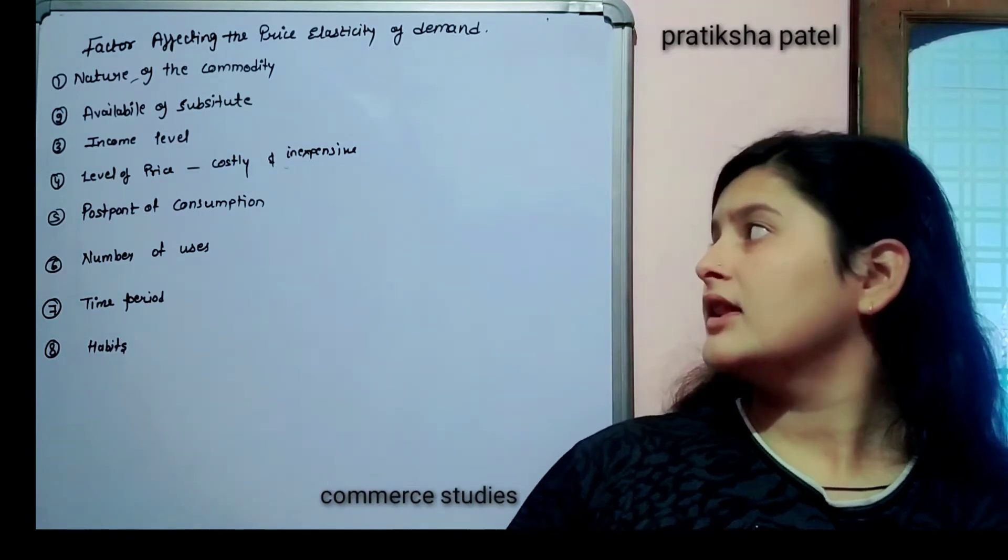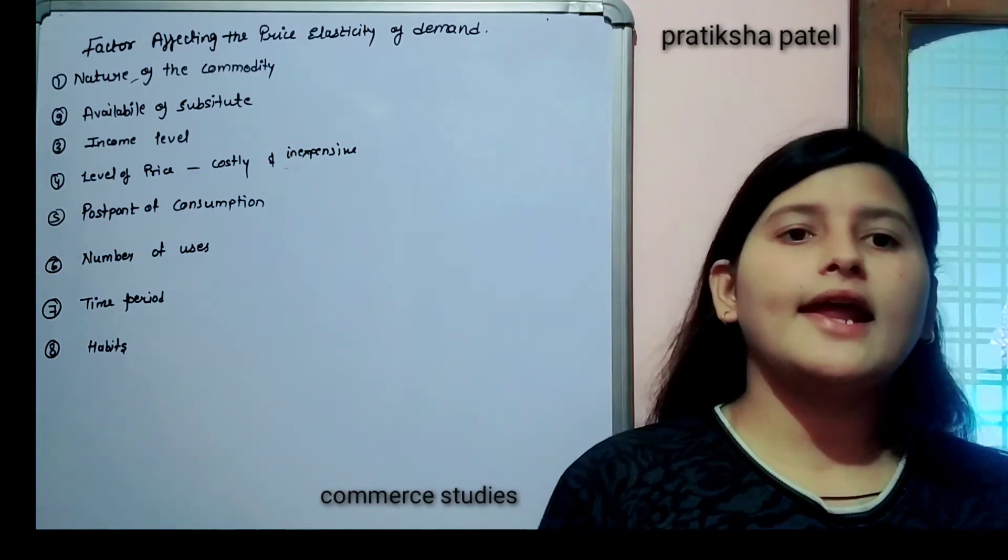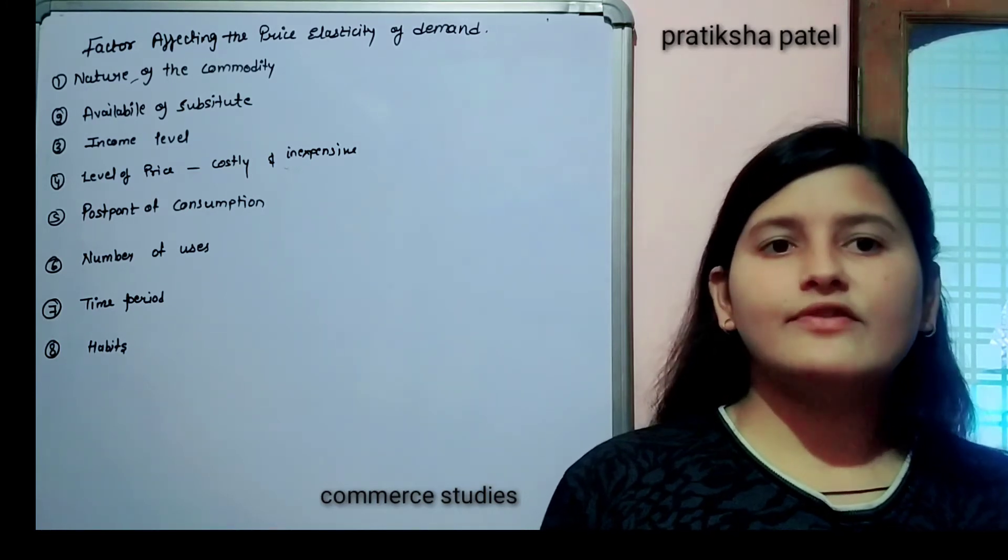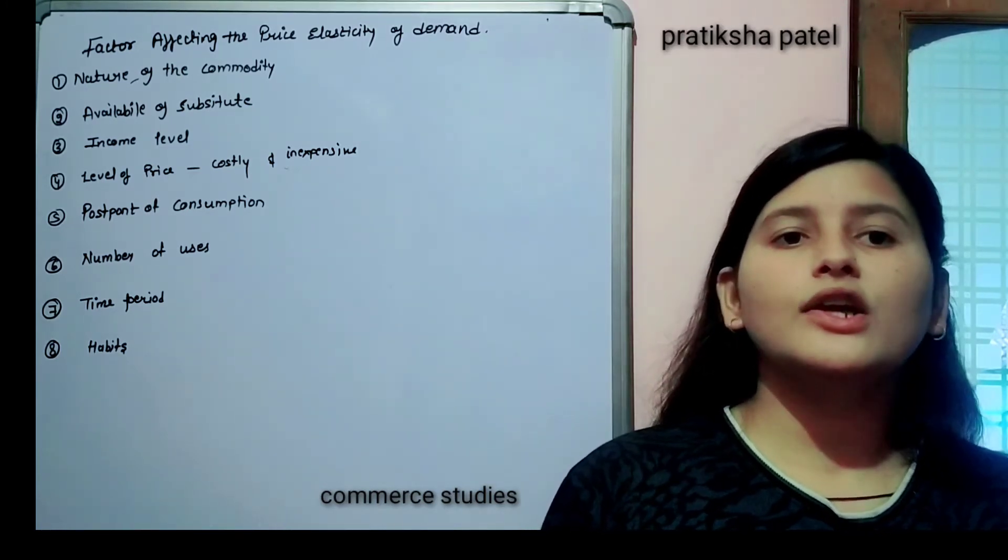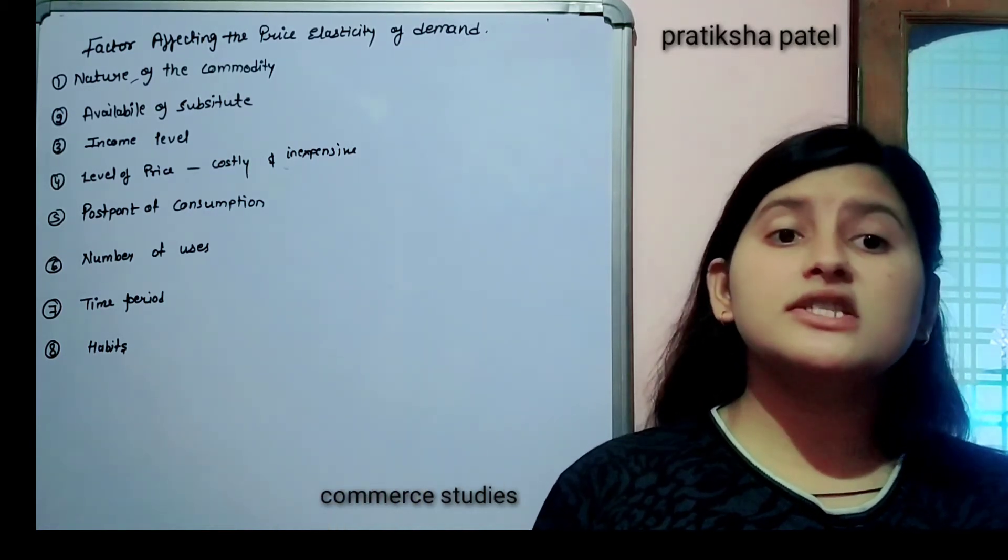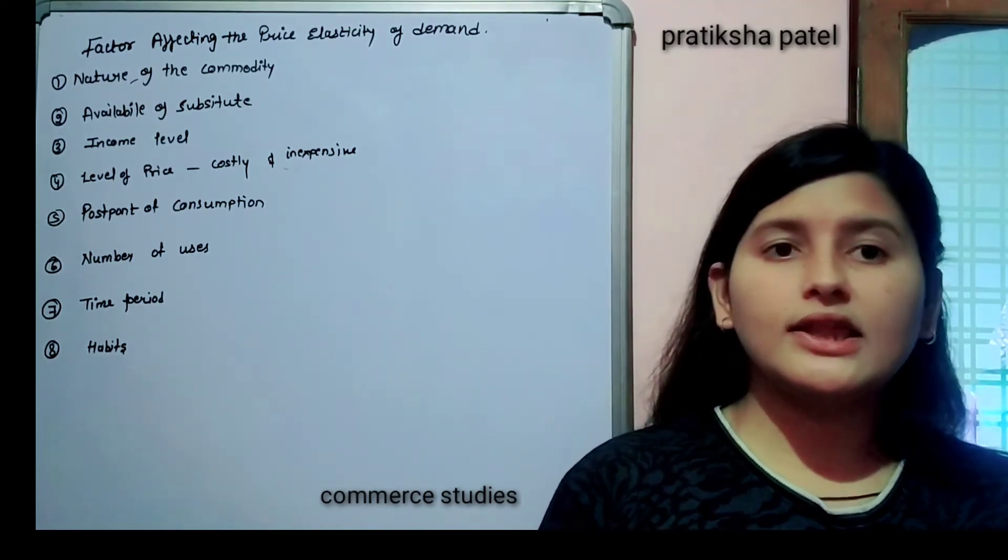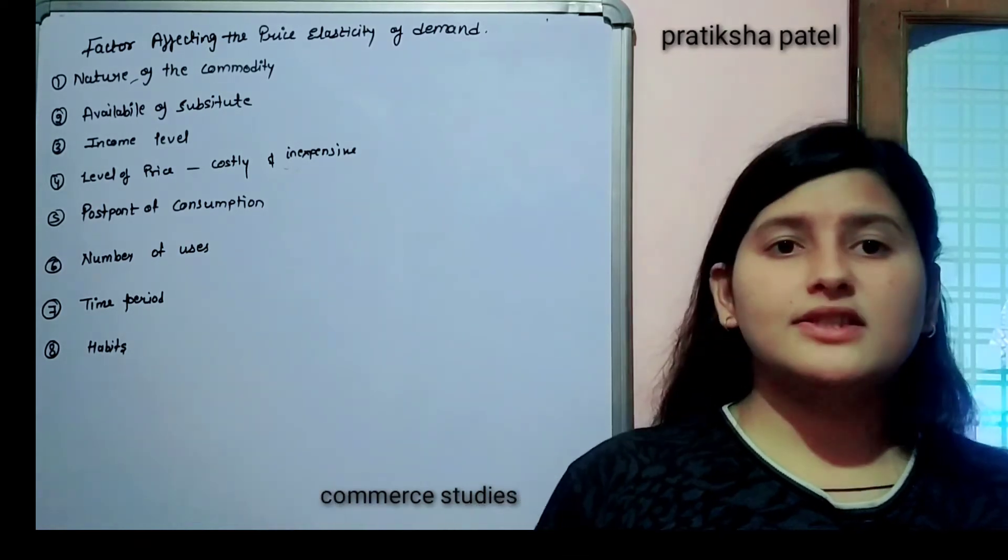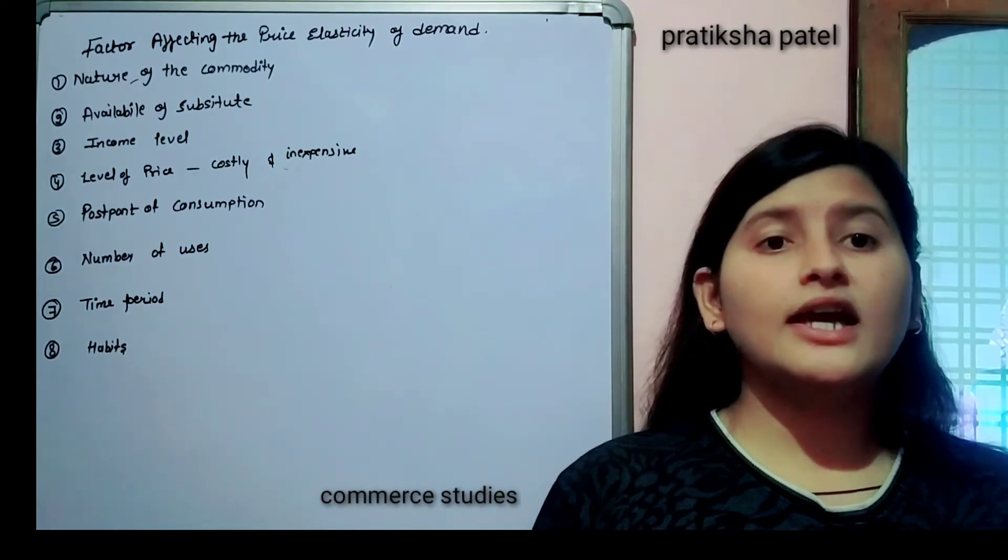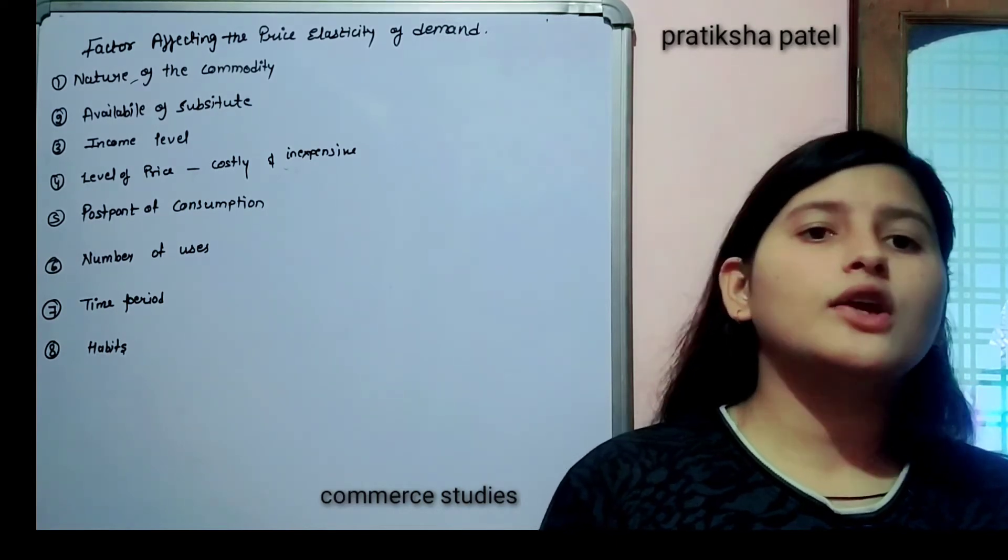Level of price - if we talk about level of price, if we talk about very costly goods, costly commodities like AC, refrigerators, these are very expensive ones. When we talk about expensive ones, there is a lot of elasticity in them, they change, they change a lot. Changes are adopted, changes happen in their demand. But if we talk about inexpensive goods, inexpensive like salt, needles, etc., these are inexpensive. So in our demand for these, there is no change, no fluctuation in our demand.